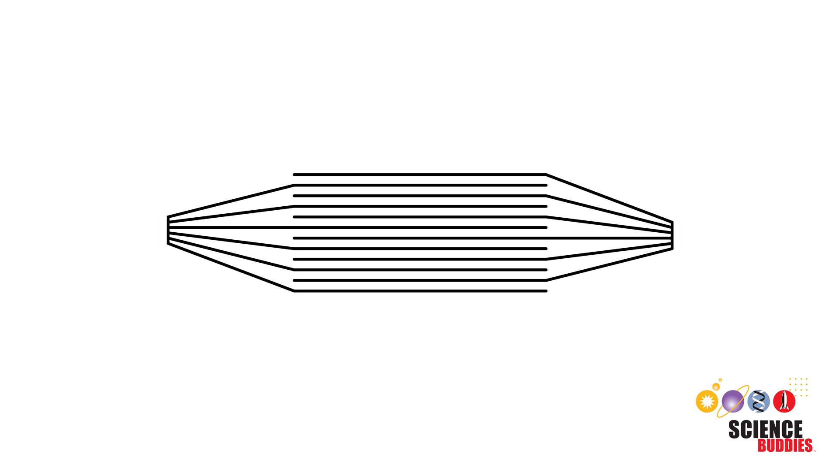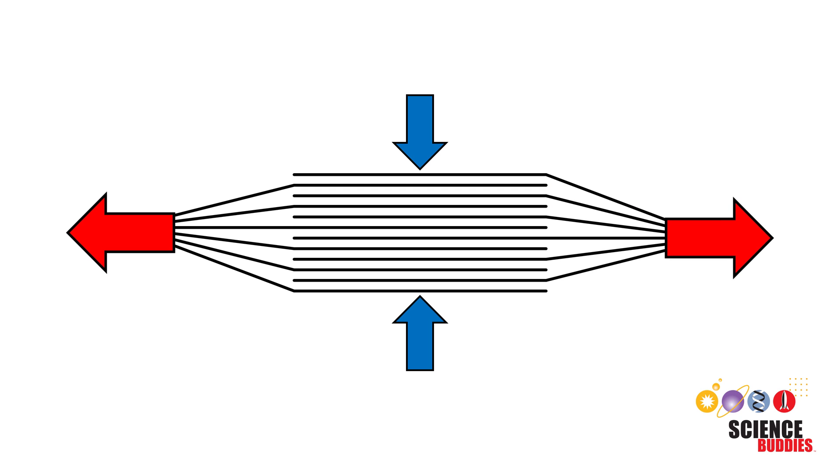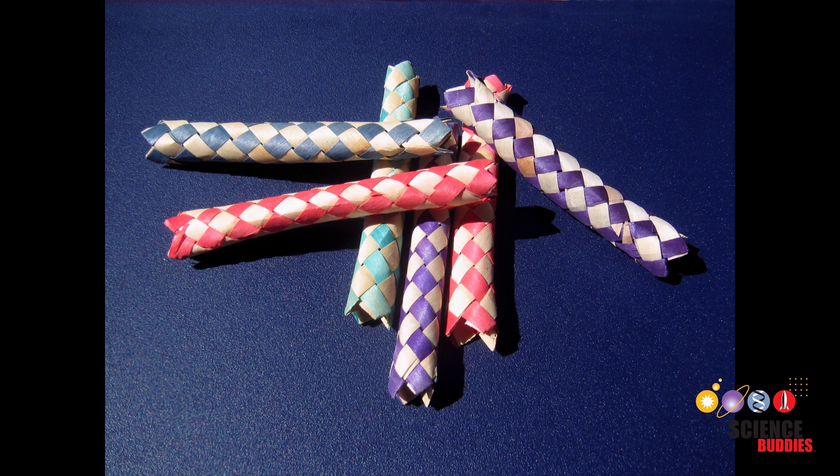When you pull the two pads apart, each individual page is put in tension. Since each page is at an angle, this tension has both a horizontal component and a vertical component. The vertical component acts to squish the pages together. The harder you pull, the bigger this vertical component gets and the harder the pages are squeezed together. This makes the sticky notes act somewhat like a Chinese finger trap. The harder you pull, the harder it becomes to pull apart.